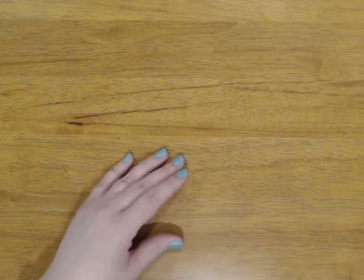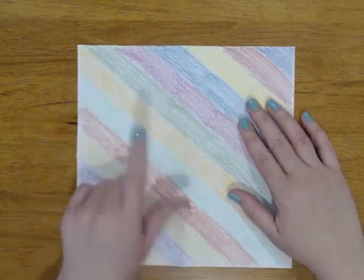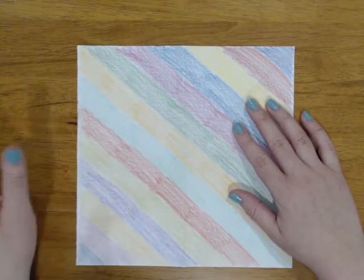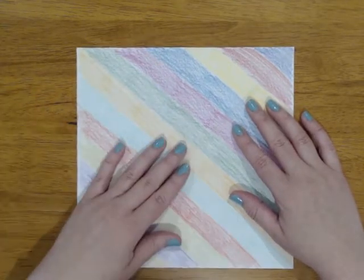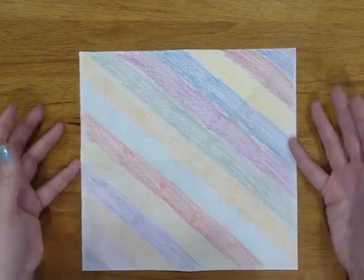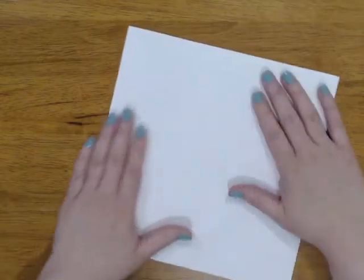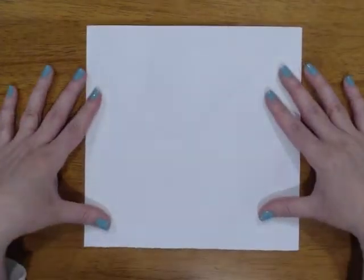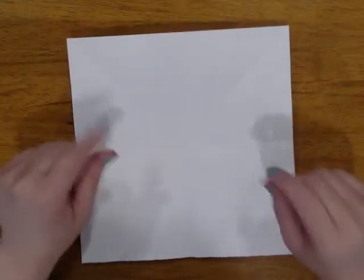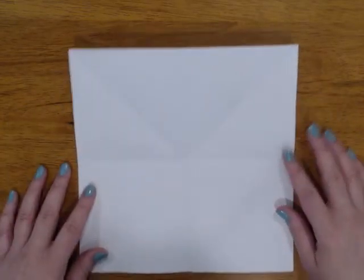So to get started we need our square piece of paper. If you haven't already watched my video on how to turn a rectangular piece of paper into a square, go back and watch that first and then come back and start this video. I've already got some folds in this piece of paper because my cat interrupted the first video of this. If she shows up again I'll just let her have a cameo and we'll keep going.